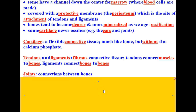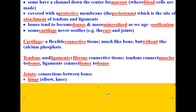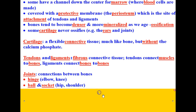Joints are connections between bones, and we have five different kinds. The hinge joint — examples are your elbow or your knee. The ball and socket joint — examples are where the femur goes into your pelvic girdle, and where the humerus in your upper arm inserts into your shoulder.